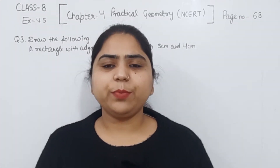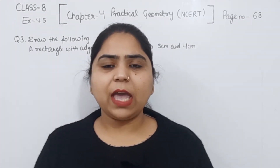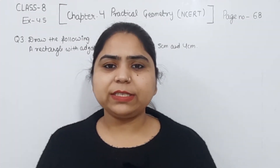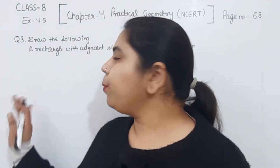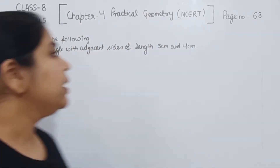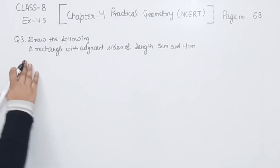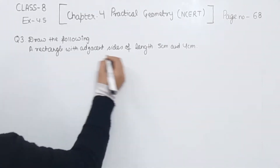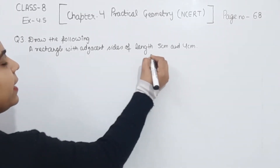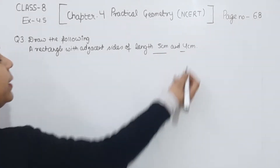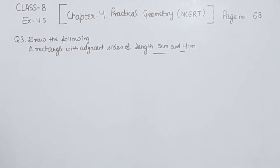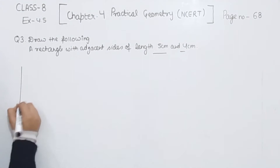Hello everyone, this is Preeti. We are here with another question of exercise 4.5, page number 68, question number 3: draw the following. We have to draw a rectangle with adjacent side lengths of 5 cm and 4 cm.